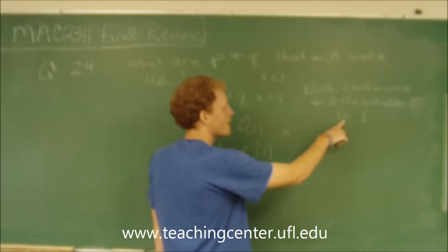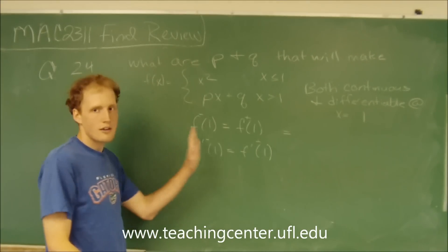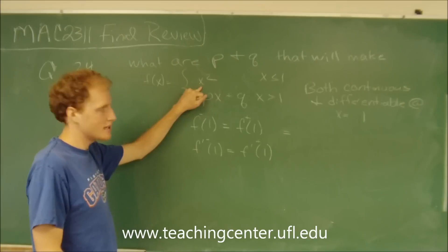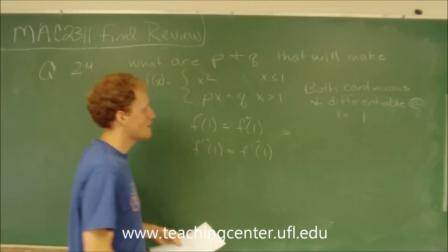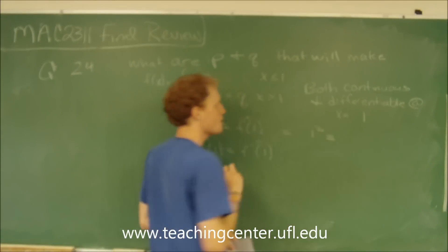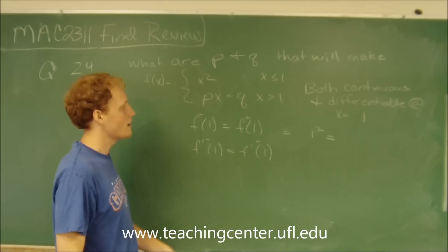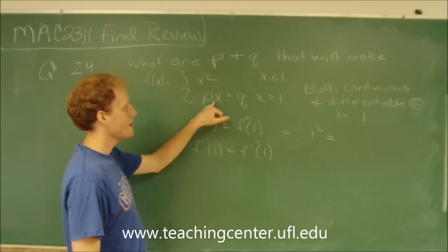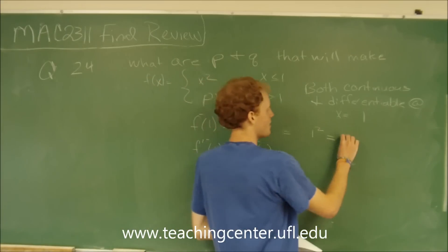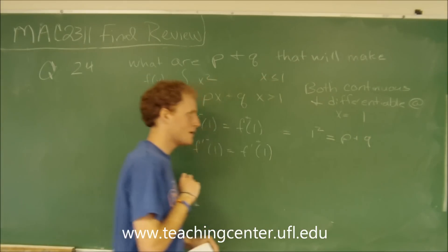So let's first deal with continuity. If we plug 1 into the function value from the left-hand side, we plug it into the first equation: 1 squared should equal the function value from the right at 1. So plug 1 into the second equation, and we get p plus q.